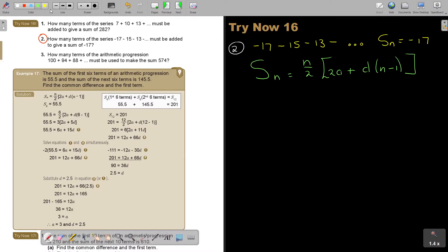So in the place of S_N, I'm going to say negative 17 equals N over 2. And what is A? A is negative 17. Oh, it's actually exactly the same. Did you see that? This is interesting.